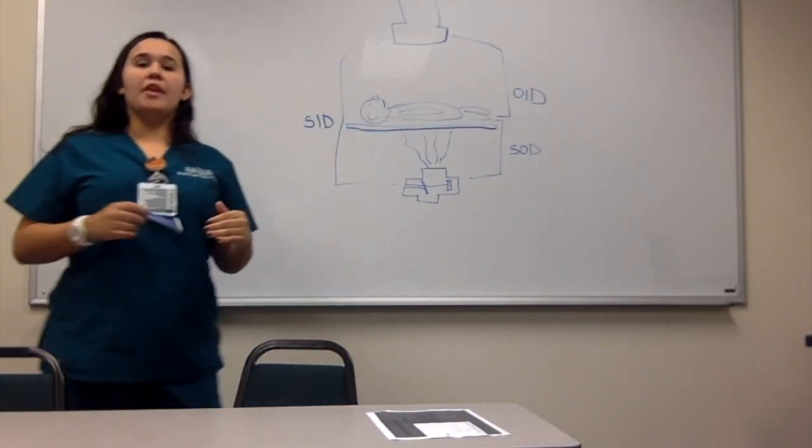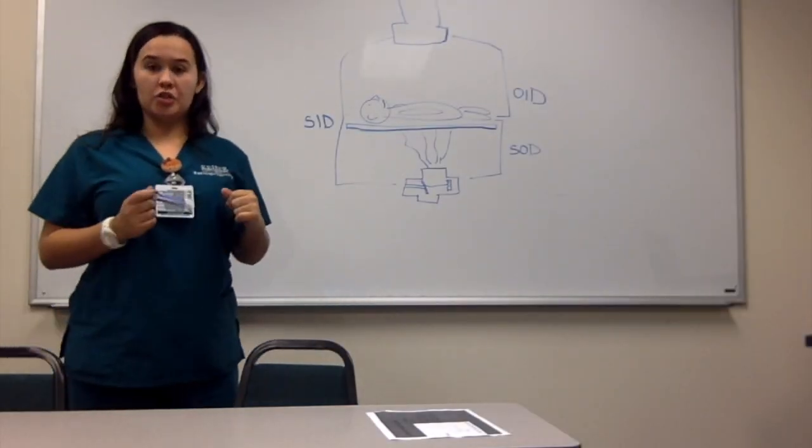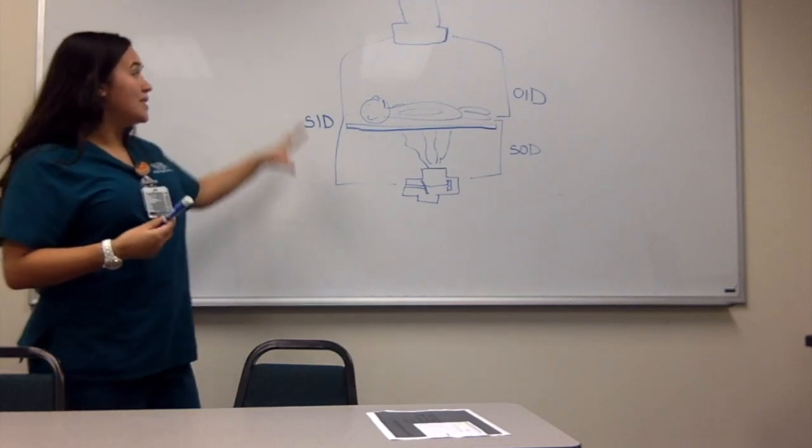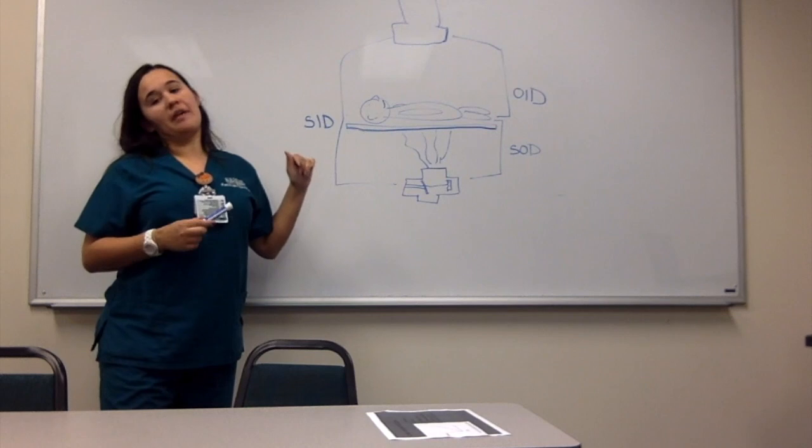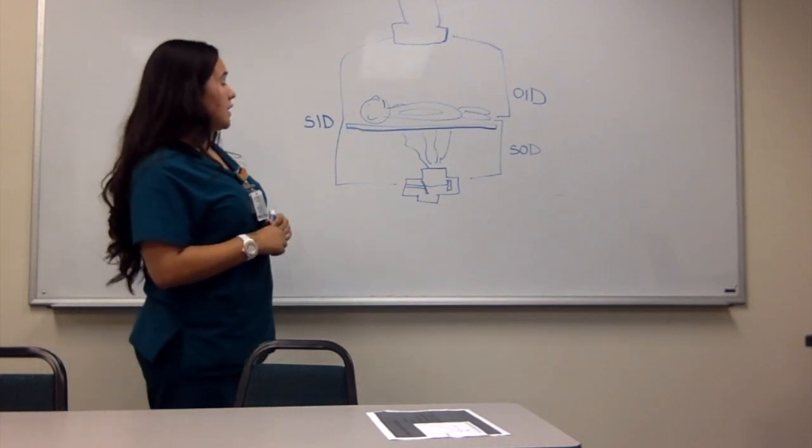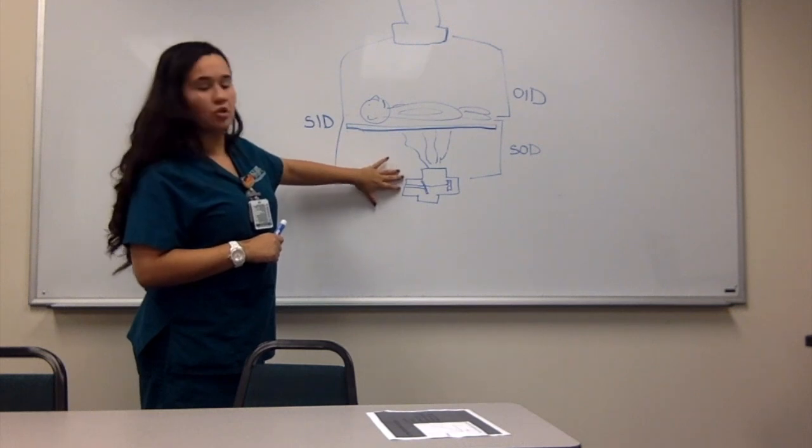So in normal x-ray, the bigger the SID, the less patient dose. But in fluoroscopy, it's a little bit different. When you decrease the SID, you actually have less patient dose. The reason behind this is because the tube is at the bottom in conventional fluoroscopy.